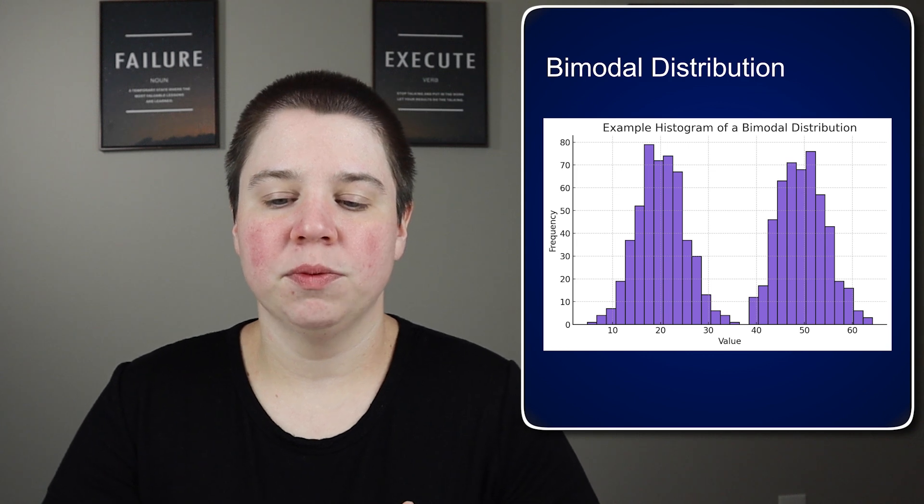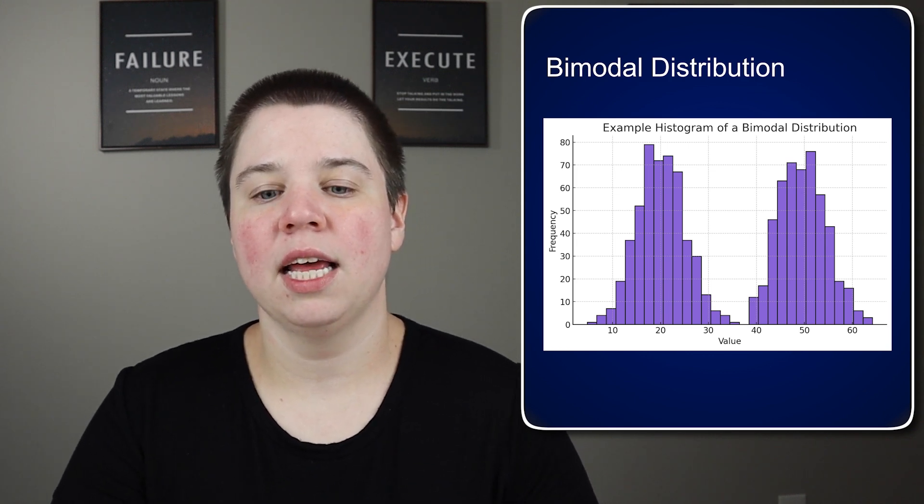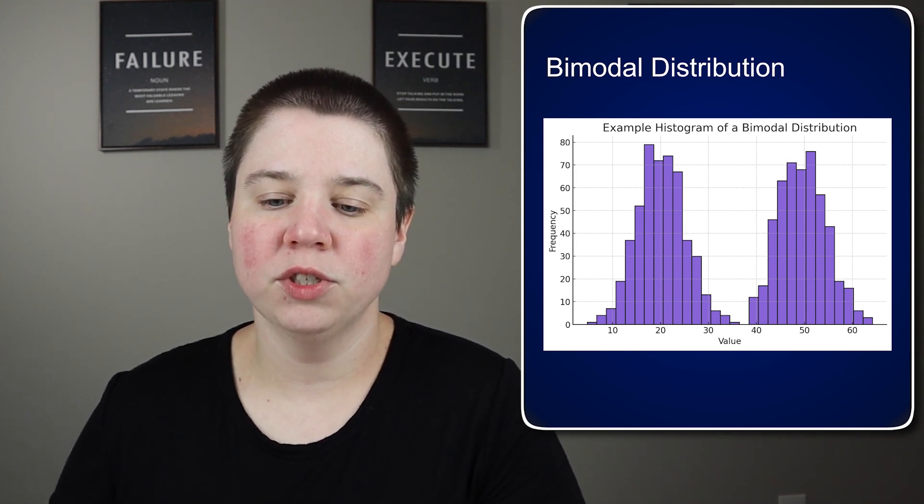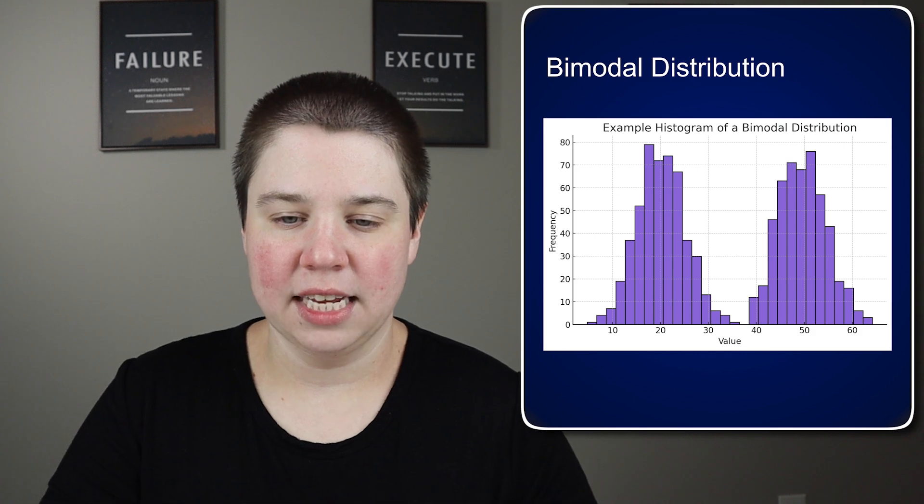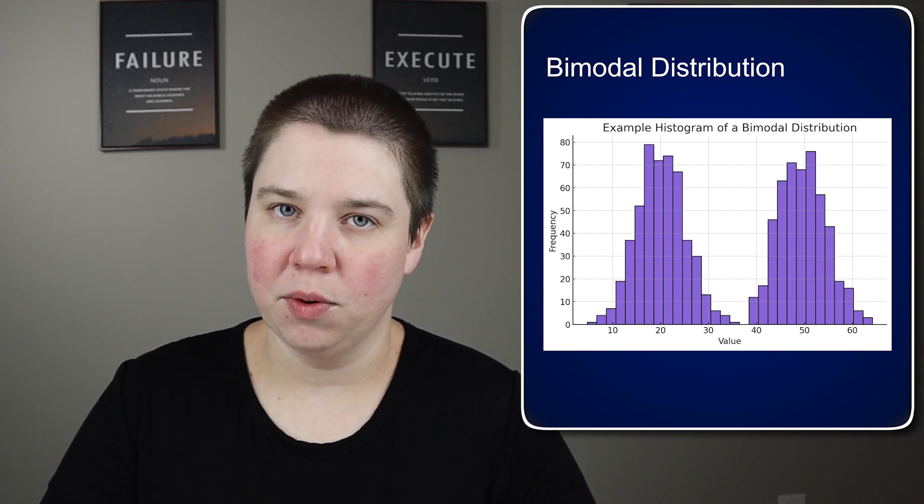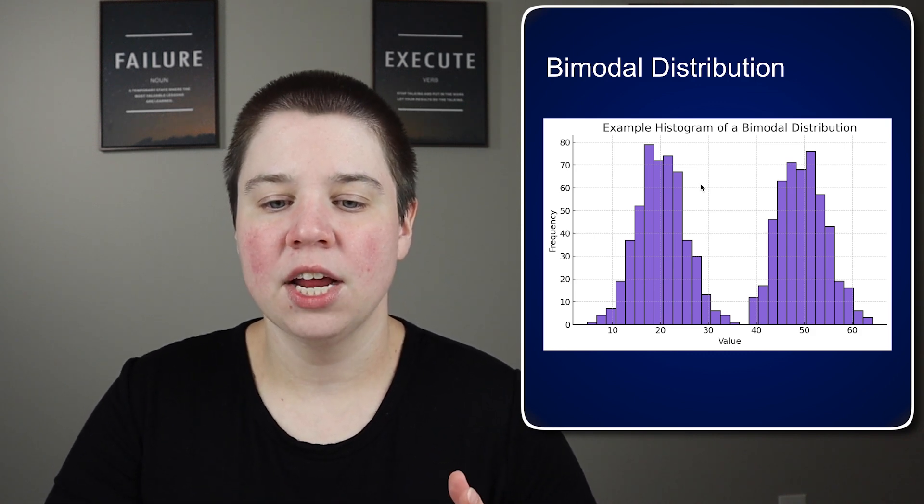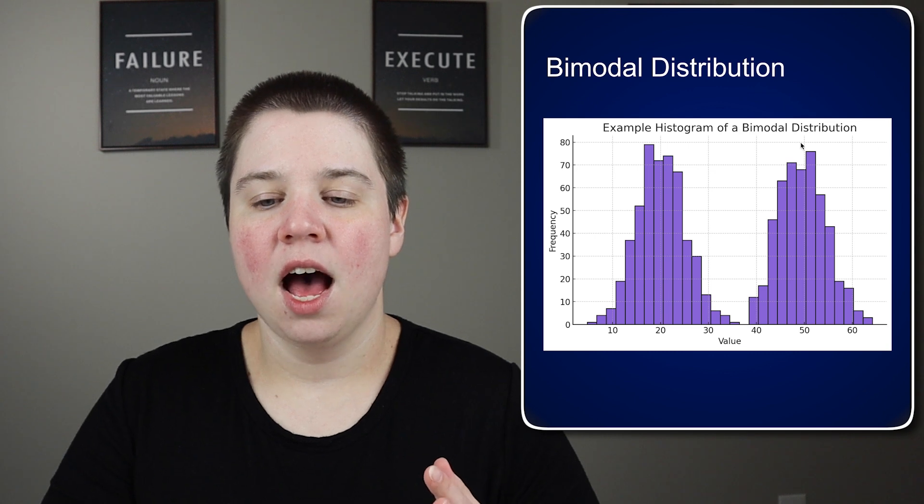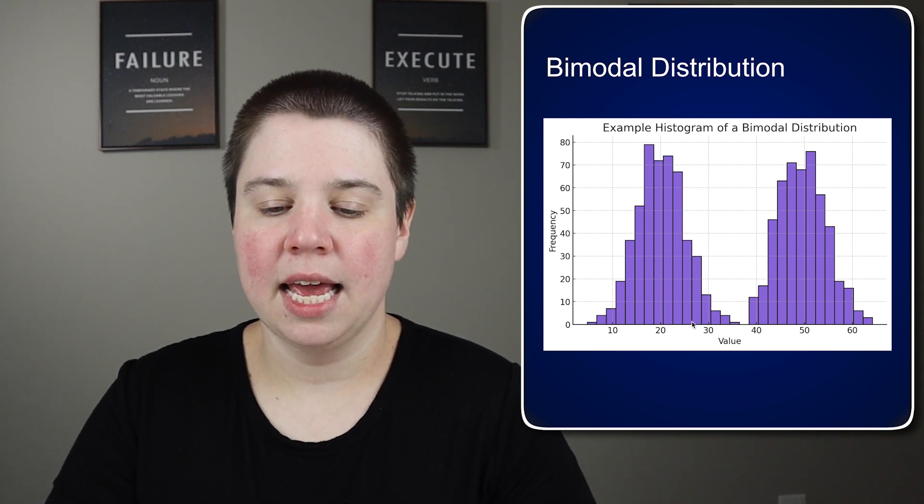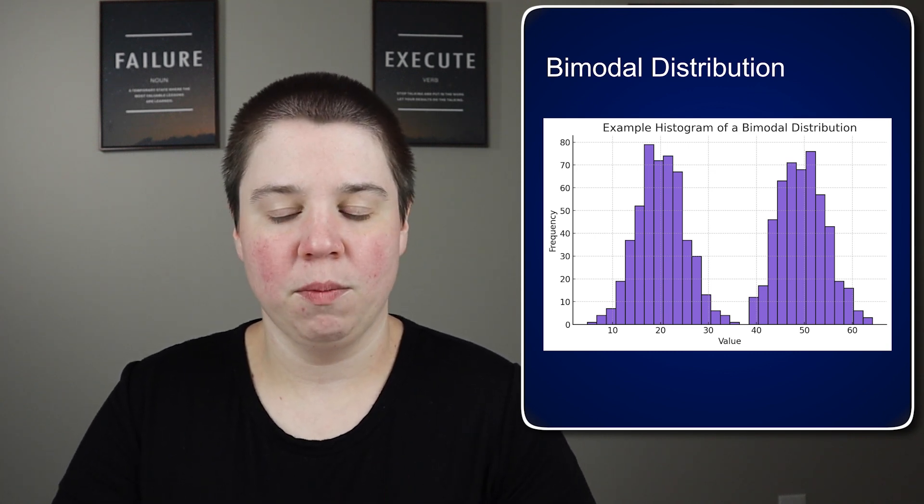And then a bimodal distribution, you can see that this essentially looks like two normal distributions just added together in the same graph. This is essentially what a bimodal distribution looks like. You essentially get two separate peaks here for each of the modes, and then you get a normal distribution on both sides of those.